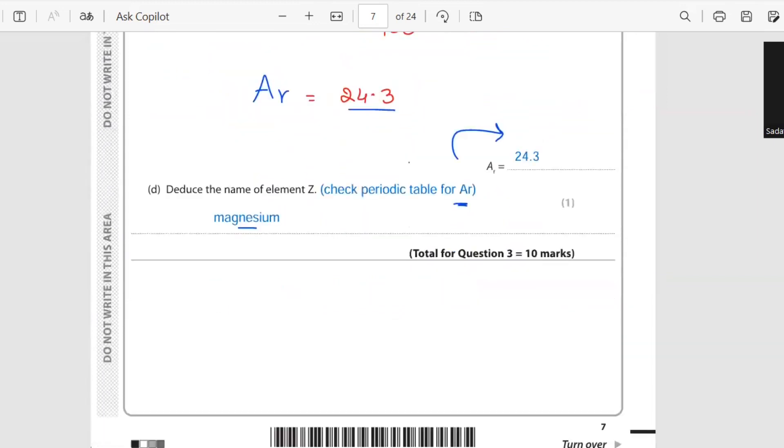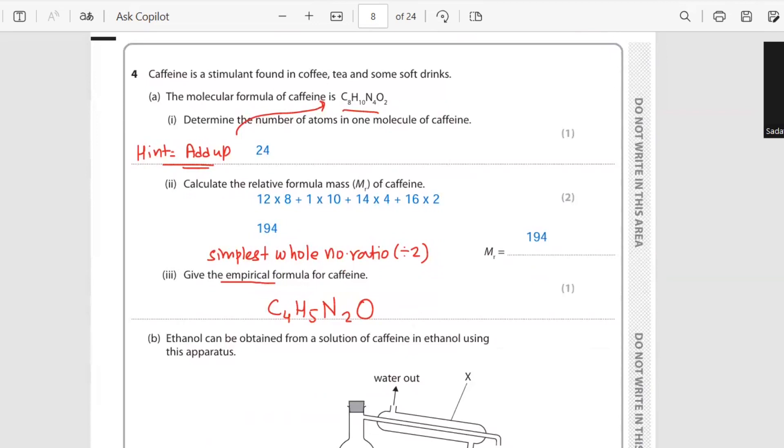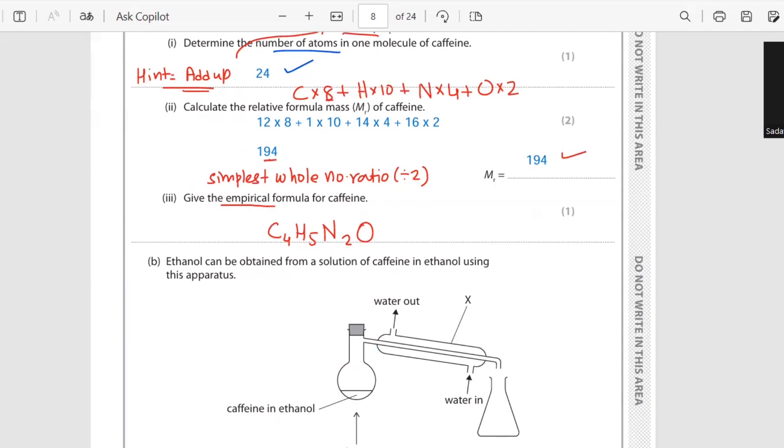Question number four: caffeine is a stimulant found in coffee, tea, and some soft drinks. Molecular formula given: C8H10N4O2. Determine the number of atoms in one molecule of caffeine. So just count the total number of atoms: 8, 10, 4, and 2, and you will get the answer. Calculate the relative formula mass Mr of caffeine. How to do it? Carbon is 8 times, plus hydrogen is 10 times, nitrogen is 4 times, and oxygen is 2 times. Multiply their atomic masses with their numbers. So 12 is atomic mass of carbon, hydrogen 1, 14 is nitrogen atomic mass, and 16 is atomic mass for oxygen. Multiply these values with the number of atoms and then you will get the relative molecular mass.